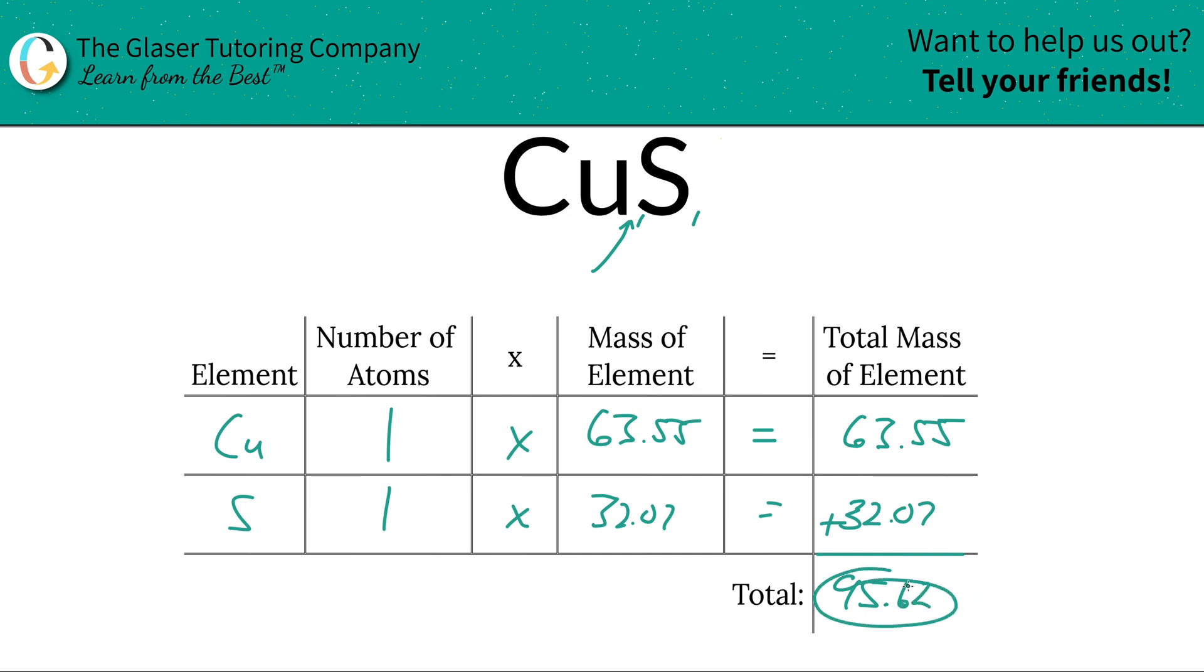And that was the first step to the process, to find the total mass. Now that I found this total mass down here, we're going to add another column to the table. We're going to calculate that percent. Easy peasy.